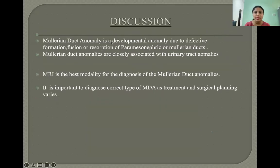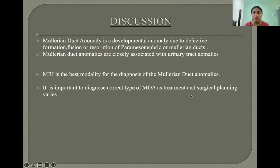In discussion, Mullerian duct anomaly is a developmental anomaly due to defective formation, fusion, or resorption of the paramesonephric or Mullerian ducts. Mullerian duct anomalies are closely associated with urinary tract anomalies. MRI is the best modality for diagnosis, and it is important to identify the correct type as treatment and surgical planning varies accordingly.